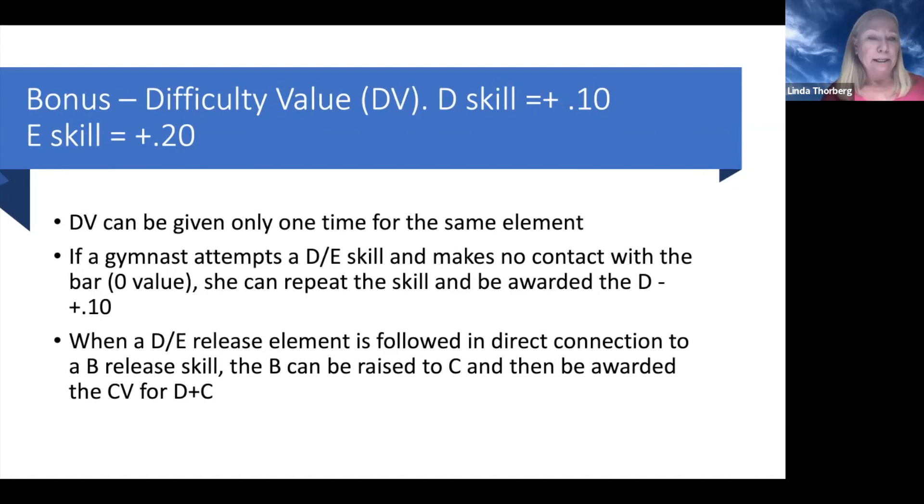But if she does a D or E skill, let's say it was a Tokachev, and she doesn't even touch the bar, which is not uncommon, they land on the mat on their stomach. If that happens, it's a zero value. But she can repeat that skill. Typically, they will get up and do it again if they know they can make it, because they want the bonus for it and they're trying to connect it to something else. She can get up and do it again in a different combination and would get the D credit that time of the plus one.